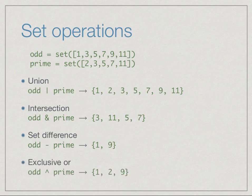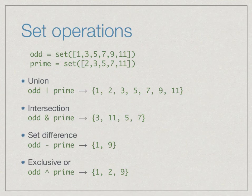Finally, unlike union which collects elements in both sets, we can do an exclusive or using the caret symbol, which takes elements that are in exactly one of the two sets. We get 1 and 9 from the first set, and 2 from the second set, because 3, 5, 7, and 11 occur in both sets. Sets can be used in various contexts to keep track of a collection of values without duplicates.